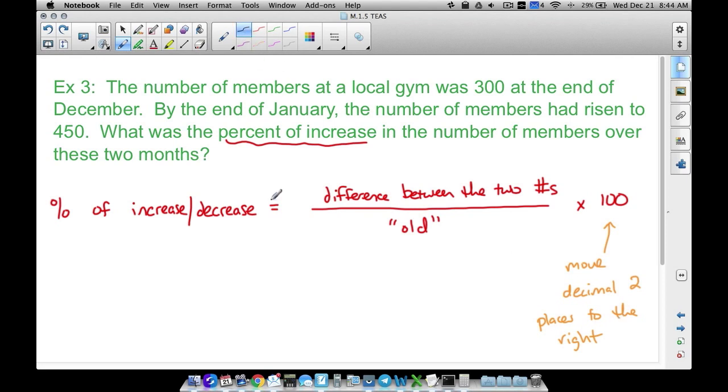What's the difference between the two numbers? Let's go ahead and figure that out. So the percent of increase: the difference between them, we're going to take 450 minus 300, and then we're going to divide that by the old. Now let's think about what happened here. What happened between the number of members? It went from 300 up to 450. So the old in this case is going to be 300. It used to be 300, now it's 450.